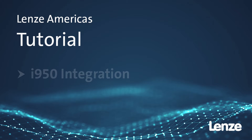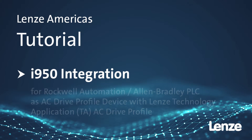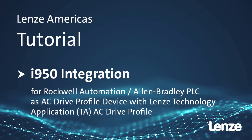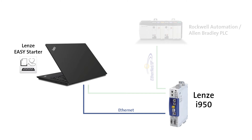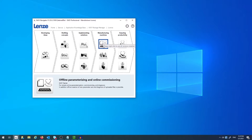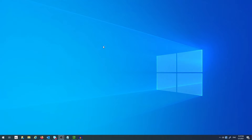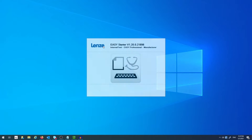Hello and welcome to Lenza Training. This tutorial will show you how to integrate the Lenza i950 as an AC drive profile device into an Ethernet IP control system. After connecting an Ethernet cable into the engineering port of the i950 drive, open up Easy Starter and go online with the device.